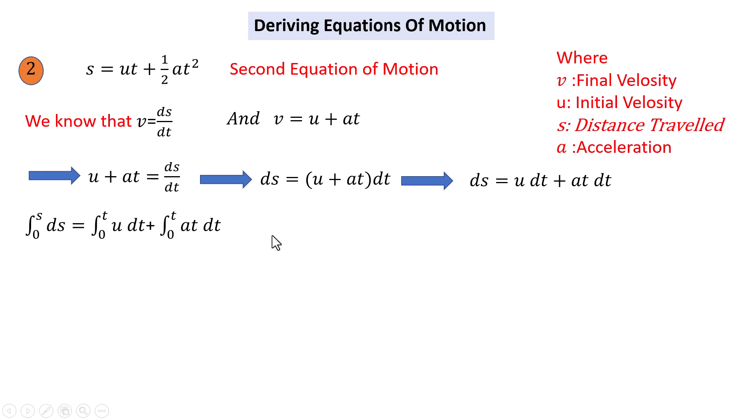Let's take out the constants. It becomes integration of ds equals u times integration of dt plus a times integration of t dt.